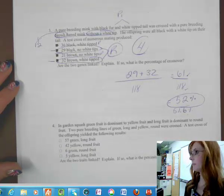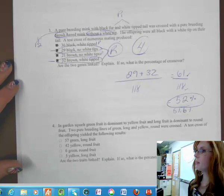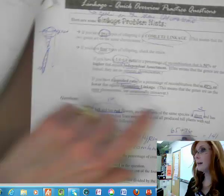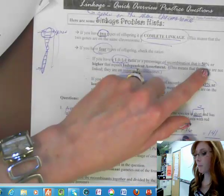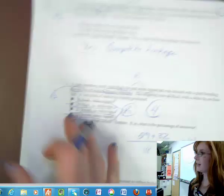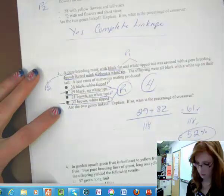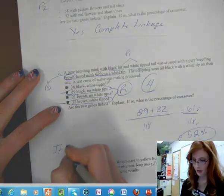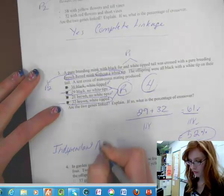Now, that gives me the percentage of recombination. Is it independent assortment, meaning they're on separate chromosomes? Or is it incomplete linkage? Okay. If you're not sure for now, you can flip back to here. Because it's over 50, independent assortment.